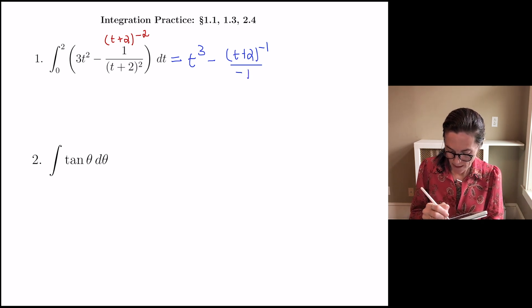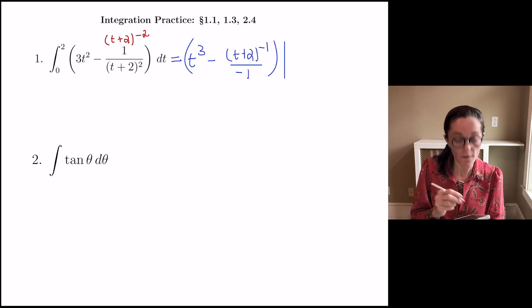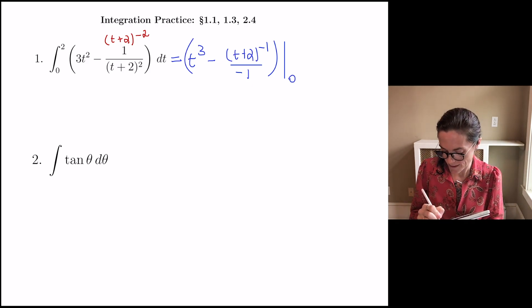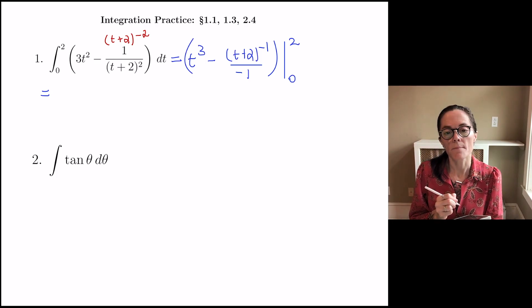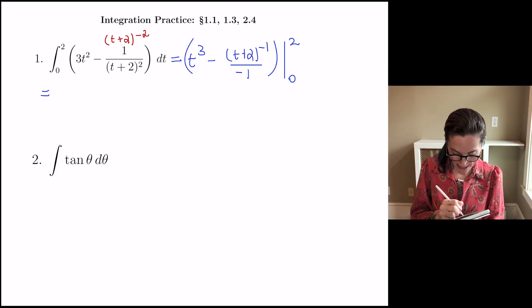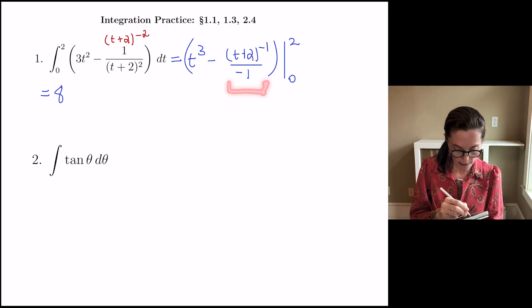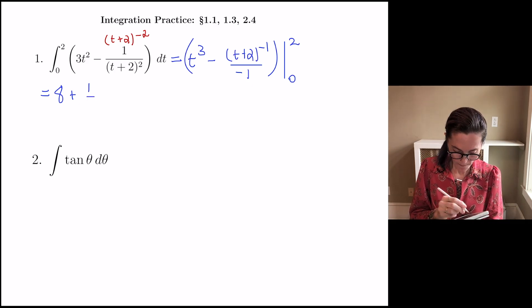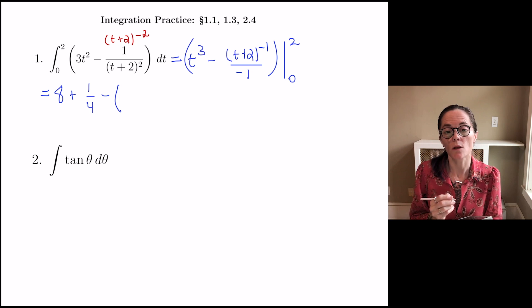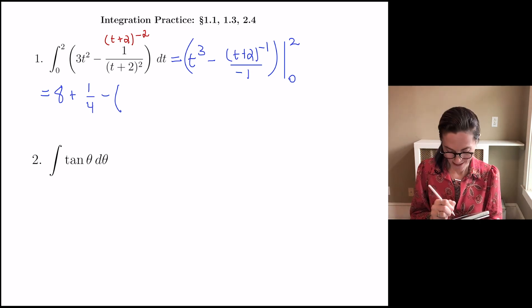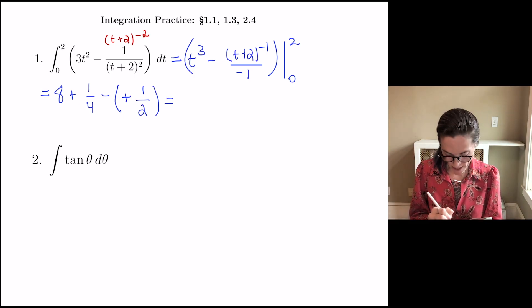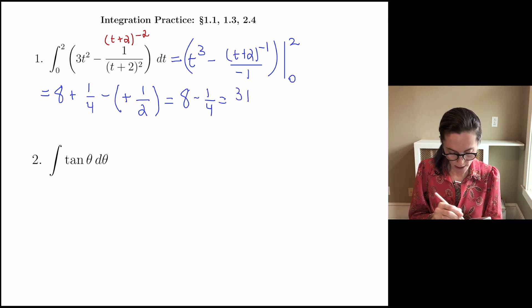The first term we have t cubed, and the second term technically is substitution, but my inside function has derivative 1, and so I will just add a power t plus 2 to the minus 1, and then divide by the higher power. This is definite, and so we evaluate between 0 and 2. Evaluate at the upper limit of integration we have 8. This term is really a plus, and then we would have 1 over 4. Subtract off, evaluate at the lower limit of integration, we would have 0, and then we would have plus 1 over 2. Altogether, we have 8 minus 1 over 4, which as a fraction is 31 divided by 4. Here is my final answer.